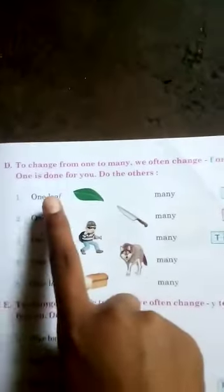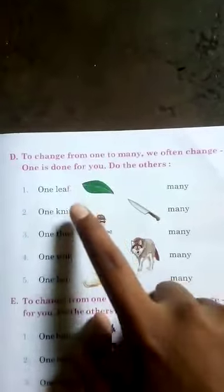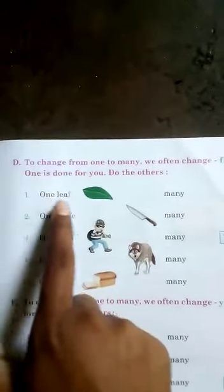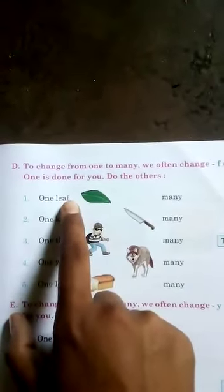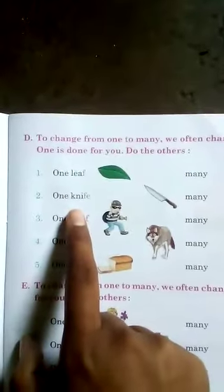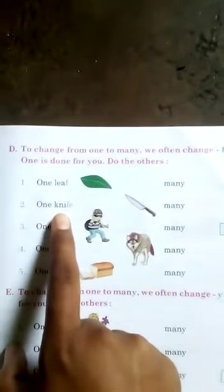To change from one to many, we often change F or FE to VES. One is done for you. For words ending in F or FE, you have to remove that and add VES. Just like here: one leaf — the last letter is F, you remove it and add VES. So L-E-A-F becomes L-E-A-VES.